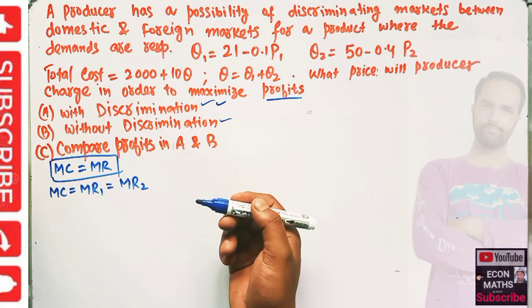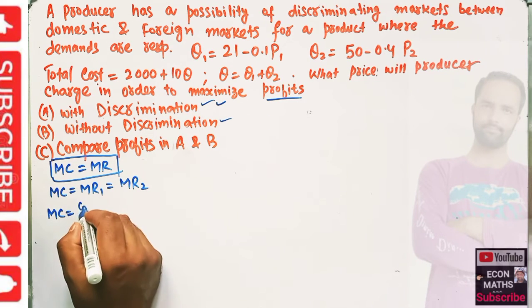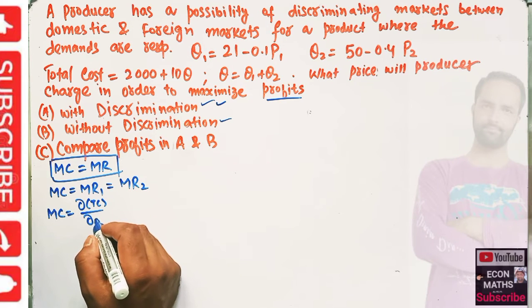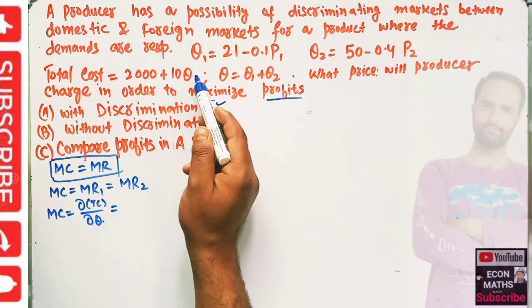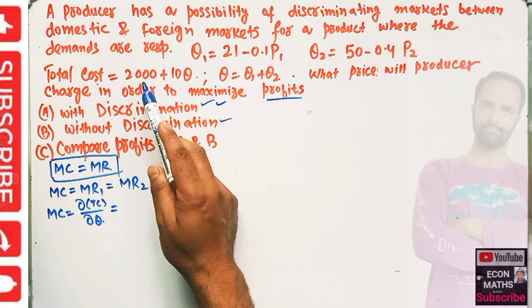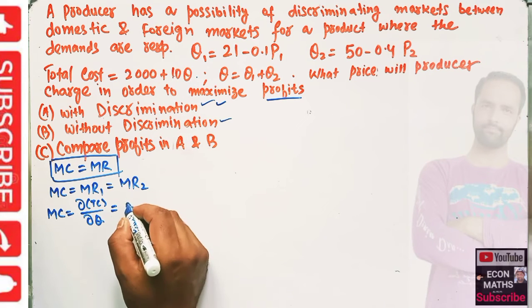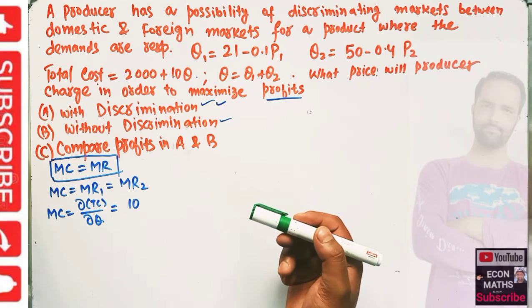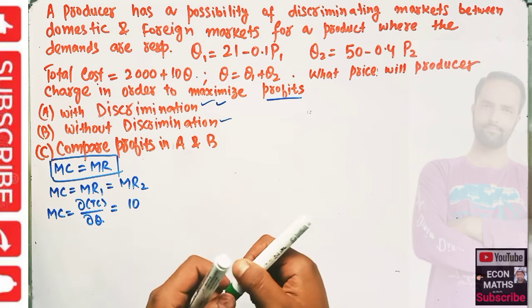Marginal cost is simply the derivative of total cost with respect to output Q. Taking the derivative: the derivative of the constant 2000 is 0, and the derivative of 10Q is 10. So marginal cost equals 10, which is the same at all levels of output.